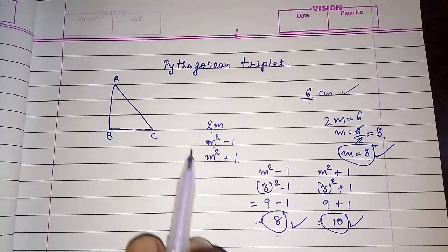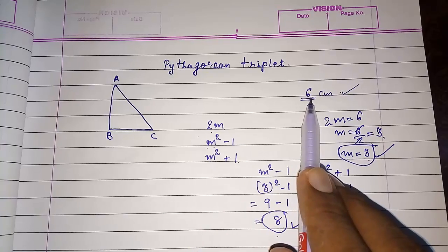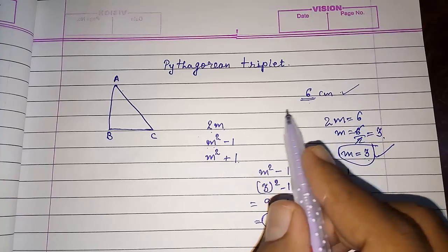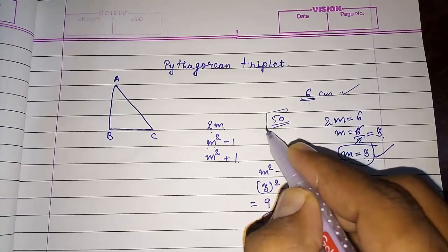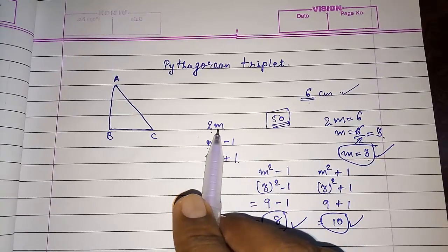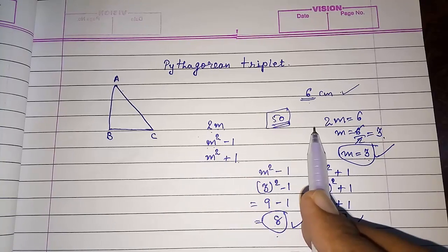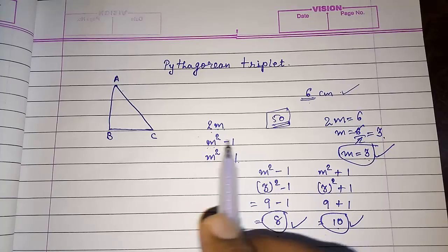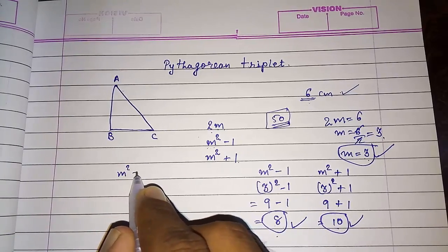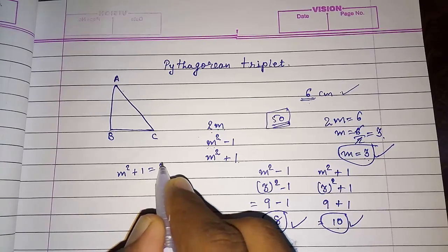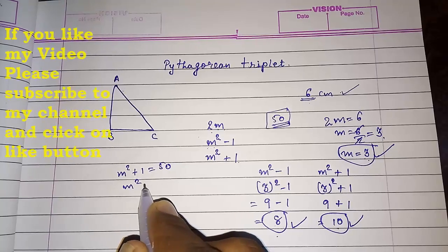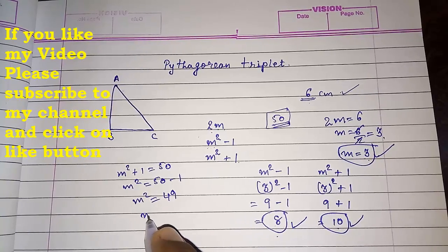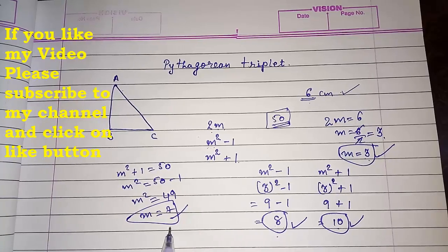For an odd number example, if the side given is 50 — which is 49 plus one — we take m squared plus one equal to 50. So m squared equals 50 minus one, which is 49, and therefore m equals 7.